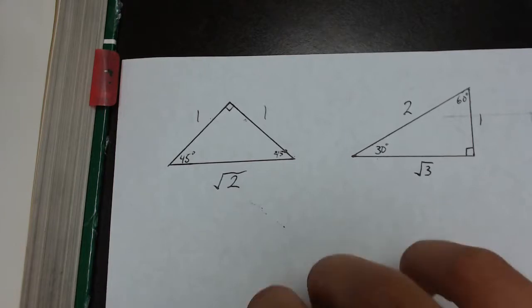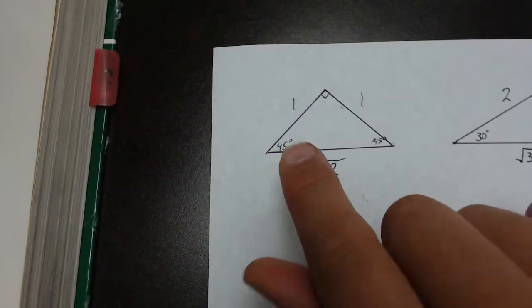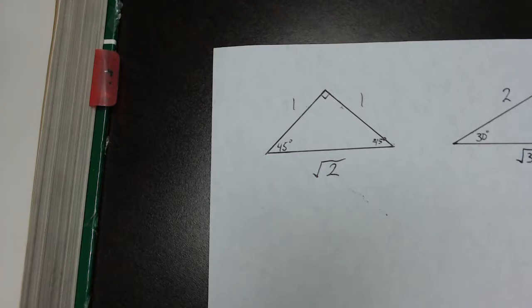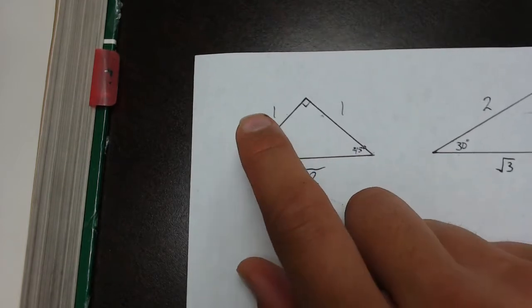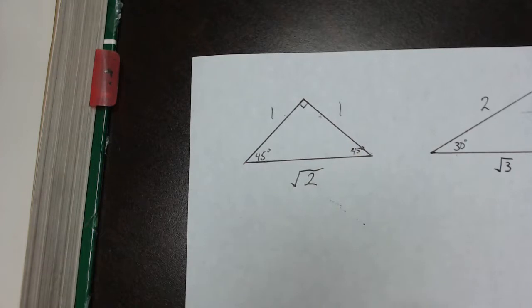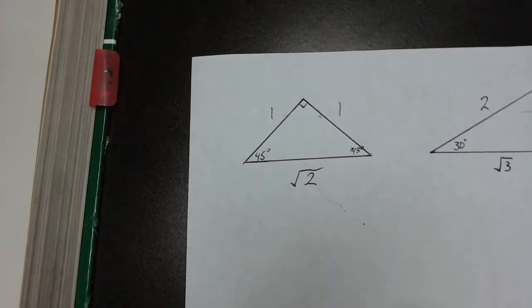So starting with the first reference triangle, this one is called a 45-45-90, and they're both named for the degrees within them. It's an isosceles triangle. We see that the length of each side is 1, and the hypotenuse has a length of square root of 2.